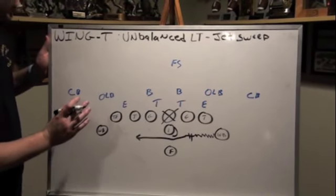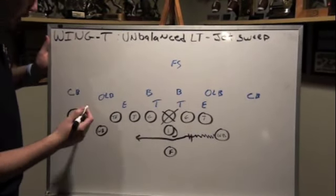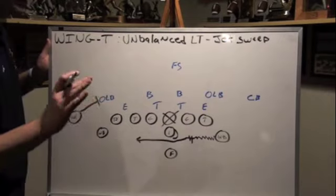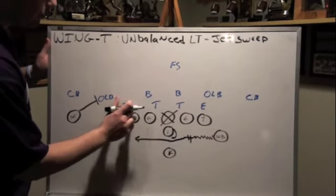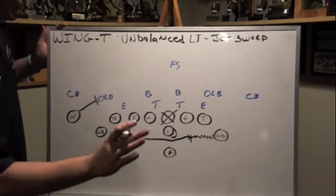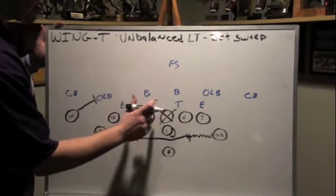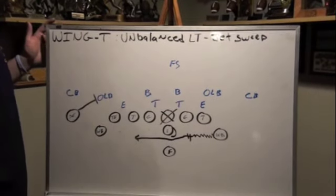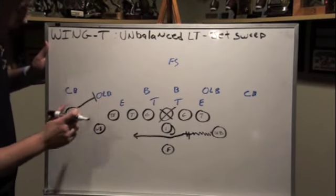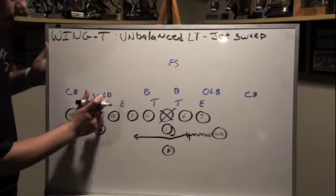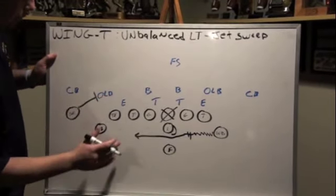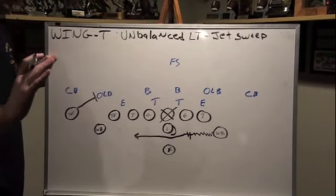Now let's get into our blocking. We're going to cheat our split end's split in a little bit because we want him to crack the outside linebacker. If it's an even front — meaning four down linemen — he's going to crack the outside linebacker. If it's an odd man front, like a 5-3 or 5-2, we're going to crack the end because the end is going to be the edge defender. So the split end is always cracking the edge defender.